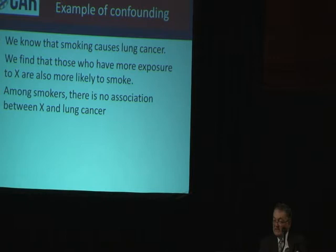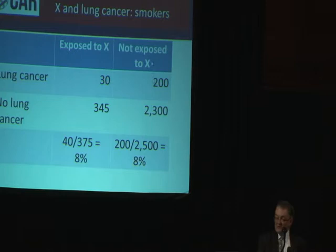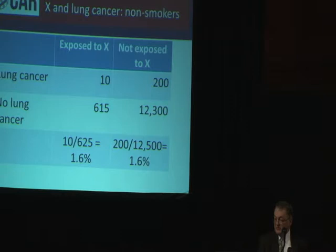So we look separately, just at people who smoke. Among smokers, 8% of those exposed to X get lung cancer and 8% of those not exposed to X get lung cancer — so among smokers there's no association. And among those who don't smoke there is also no association: 1.6% of those exposed and 1.6% of those not exposed. Comparing that 1.6% to the 8% confirms smoking is associated with much higher rates of lung cancer, but X is not.